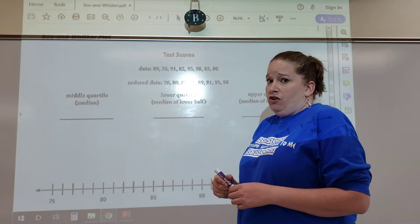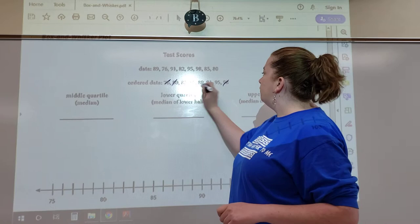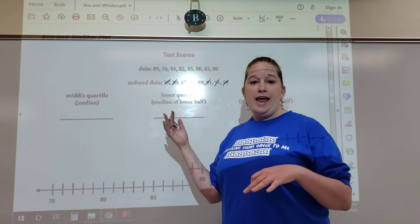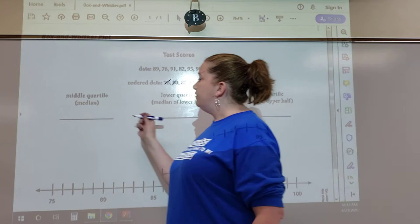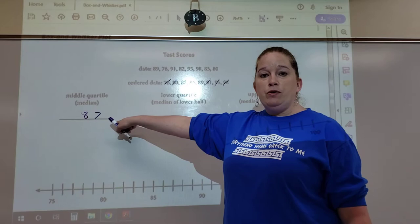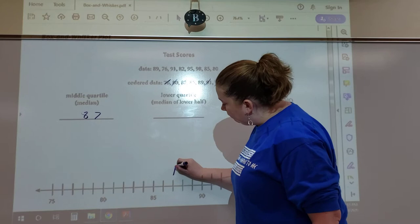The easiest way to find the median when they're in order is to start crossing them out. I'm going to cross out the smallest and biggest, then the next ones, and I end up with 85 and 89 in the middle. When you have two numbers in the middle, average them: 85 plus 89 divided by 2 is 87. Write 87 in the space that says middle quartile, then draw a line right above it on your number line.